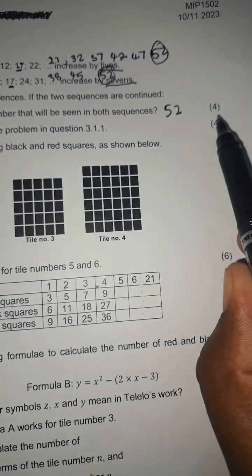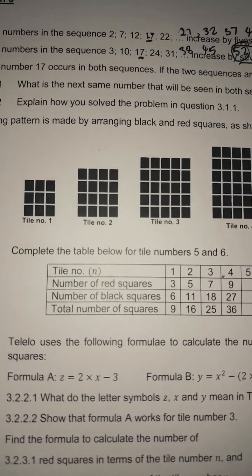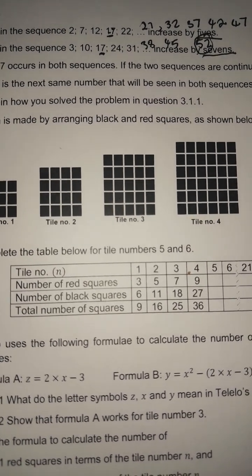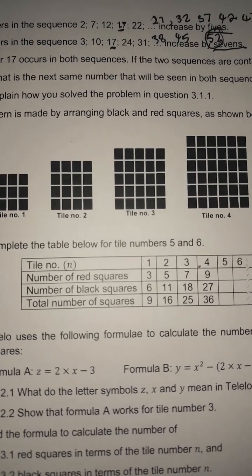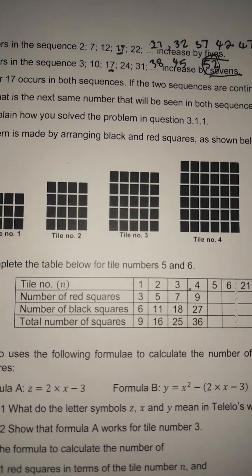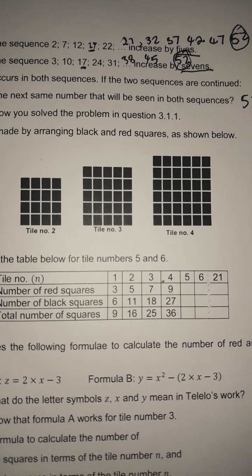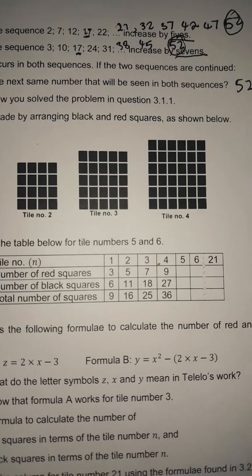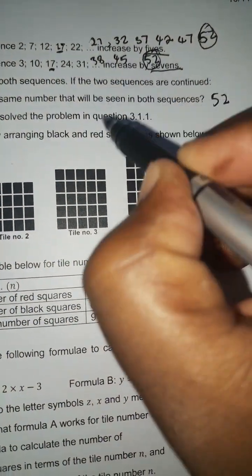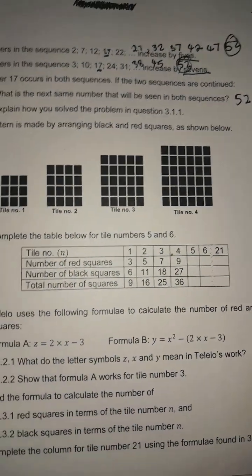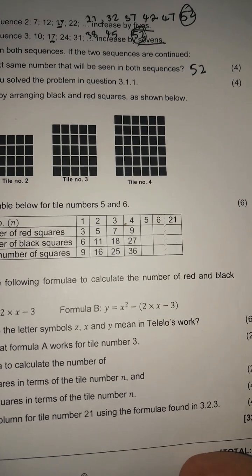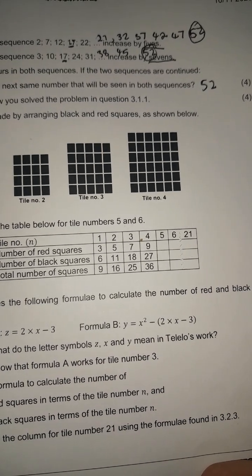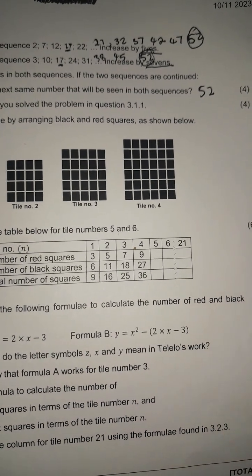You have to show the steps to get all four marks. The problem was solved by finding the difference in both patterns: for the first sequence we added by 5, and for the second we added by 7. Both sequences have an intersection at 17, and the second intersection is 52, found by progressively adding the differences.